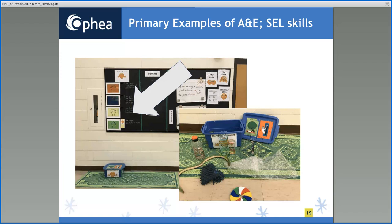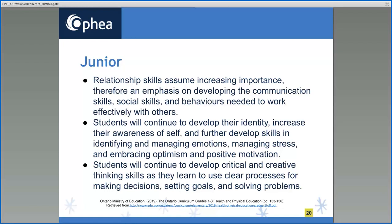It is important to create a physically and emotionally safe environment for all students to apply a range of social emotional learning skills in health and physical education and other subject areas. For students in the junior division, relationship skills assume increasing importance, and therefore there is an emphasis on developing the communication skills, social skills, and behaviors needed to work effectively with others. Students will continue to develop their identity, increase their awareness of self, and further develop skills in identifying and managing emotions, managing stress, embracing optimism and positive motivation, and developing critical and creative thinking skills.